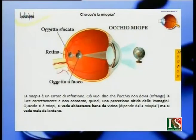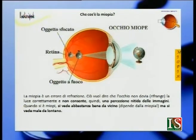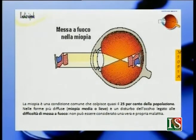La miopia è un errore di rifrazione, una condizione molto comune. L'occhio non rifrange la luce correttamente e non consente quindi una percezione nitida delle immagini. Quando si è miopi si vede abbastanza bene da vicino, ma si vede male da lontano. La miopia colpisce il 25% della popolazione, circa 15 milioni di italiani. Nelle forme più diffuse, la miopia media o lieve, è un disturbo legato alle difficoltà di messa a fuoco e non può essere considerato una vera e propria malattia. In Italia sono 5 milioni i soggetti affetti da ipermetropia e 3 milioni quelli affetti da astigmatismo.